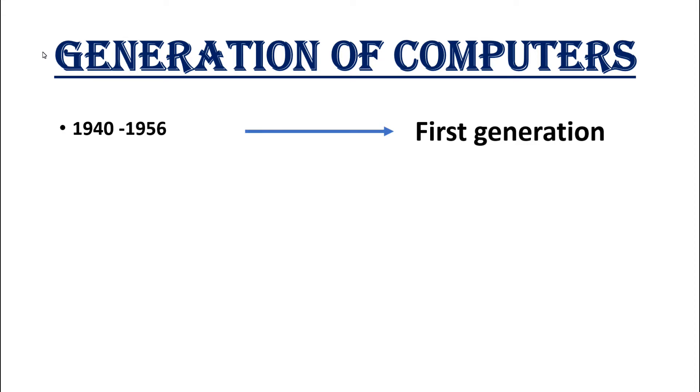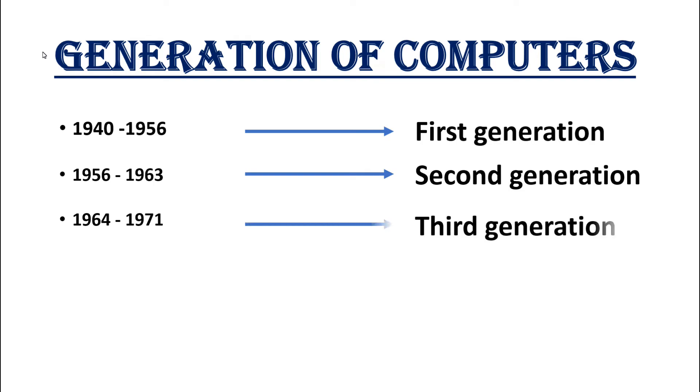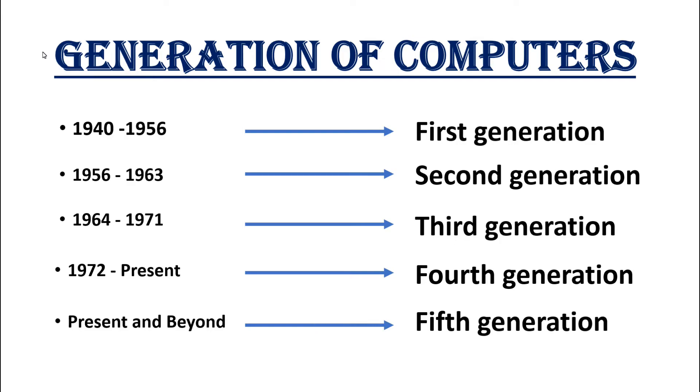which used thousands of vacuum tubes. Second generation came between 1956 to 1963, using transistors. Third generation was between 1964 to 1971. Fourth generation started from 1972, and the fifth generation is based on artificial intelligence. Let's discuss the first